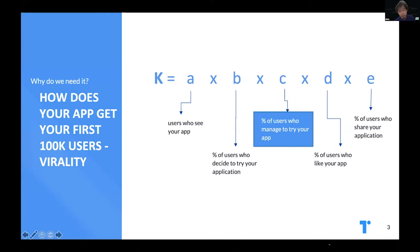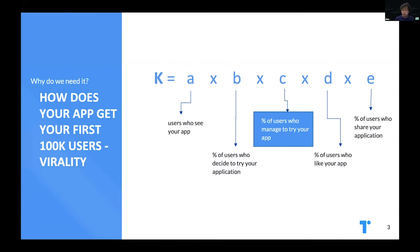If you're a DApp developer developing an application in general, the largest concern and need for your application ultimately boils down to one thing: users, users, users. How does your application really get your first 100k users? There's this theory called the virality factor, or the K factor, which is a product of your whole user's journey through the application — users who see your app, the percentage who decide to try it, who actually manage to try it, who like it enough to share it, and who actually share it. If your K factor is above one, for every new user you get, you'll get another user, and your app is basically viral.